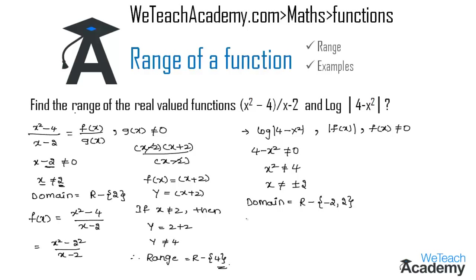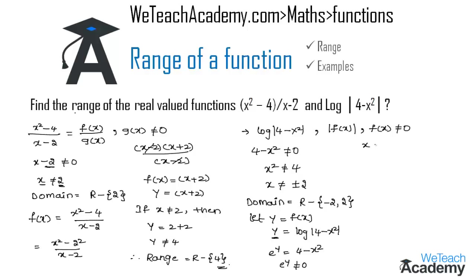Now let us find the range. Let y = f(x) = log(4 - x²). Using the logarithmic property that log n to base e equals 1 implies e^x = 1, we apply this to get e^y = 4 - x². The range is defined only when e^y is not equal to zero. Since x belongs to all real numbers, e^y must be greater than zero. Therefore the range of this function is all real numbers.